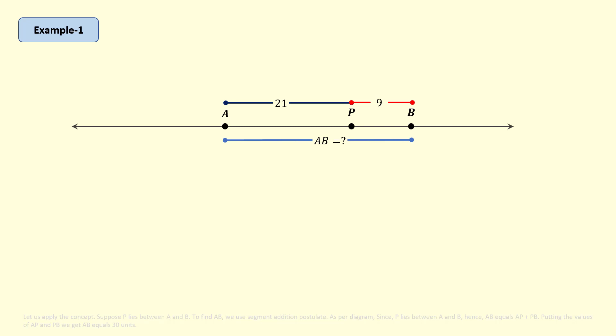lies between A and B. To find AB, we use segment addition postulate. As per the diagram, since P lies between A and B, hence AB equals AP plus PB. Now putting the values of AP and PB, we get AB equals 30 units.